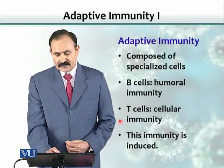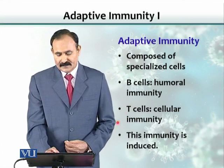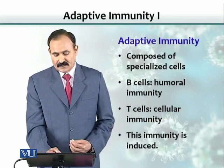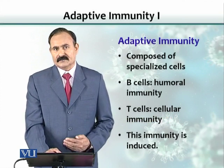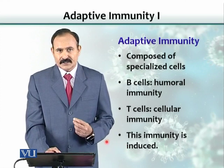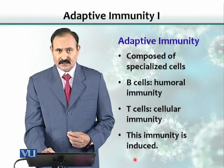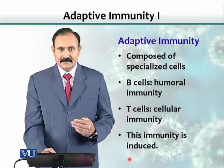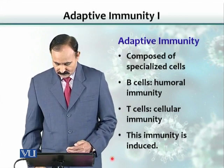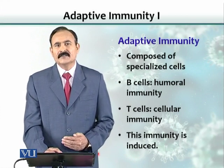Another population of cells called T cells is also an important part of adaptive immunity. T cells constitute cellular immunity. This part of the immunity — adaptive immunity — is induced. It is adaptive because it is induced by exposure to the antigen. In other words, if there is no exposure to the antigen, this part of the immunity is not activated.